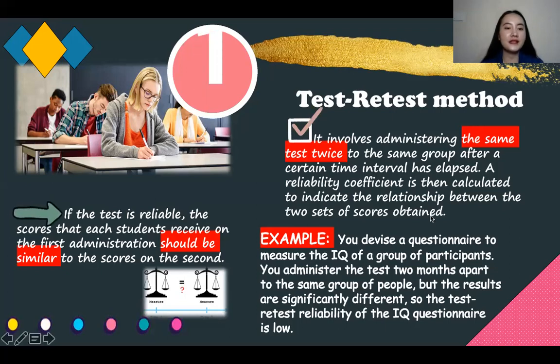And if a test is reliable, the scores that each student receives on the first administration should be similar to the scores on the second. Or in other words, it is giving the same test twice to the same people at different times to see if the scores are still the same.